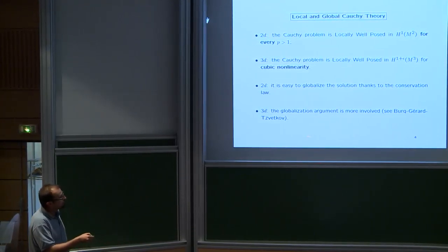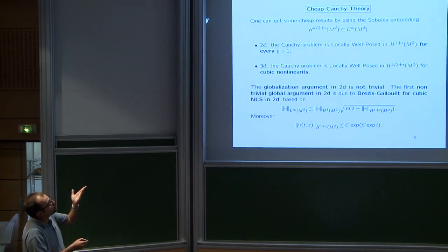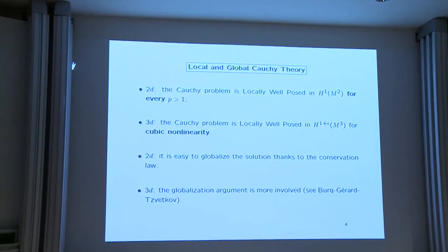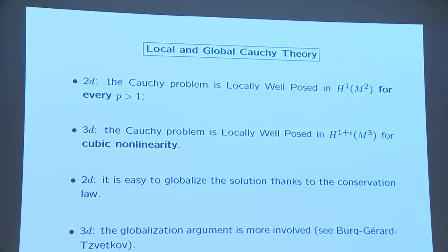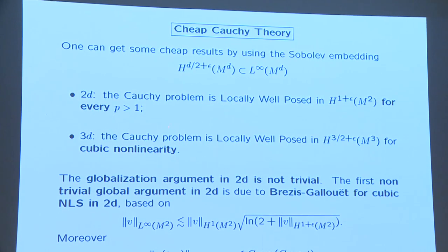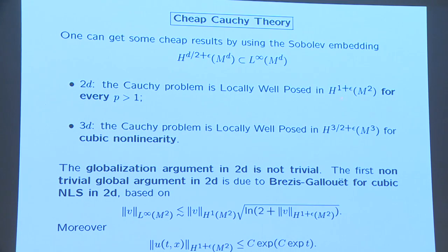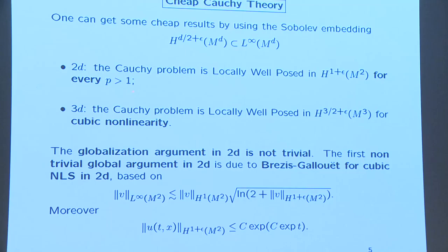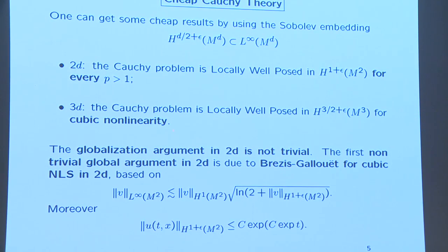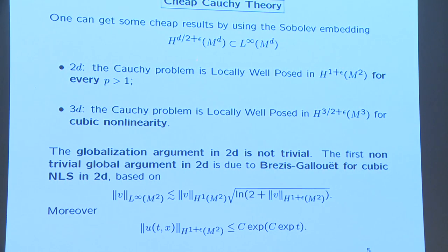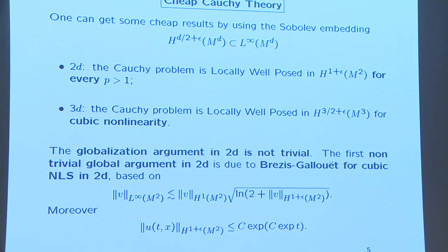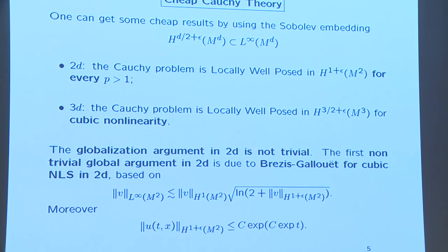In 2D globalization is free because you are at the energy level; in 3D the globalization argument is much more involved, due to Burq, Gérard and Tzvetkov. On a generic compact manifold what is really easy is to solve locally in time in H^{1+epsilon}. In 3D, just by using the Sobolev embedding you have to work in H^{3/2+epsilon}; to reach H^{1+epsilon} you must use Strichartz estimates and exploit the dispersion more seriously.